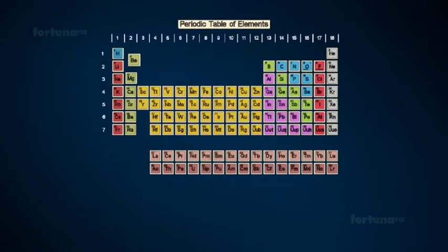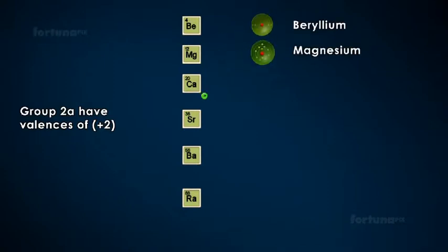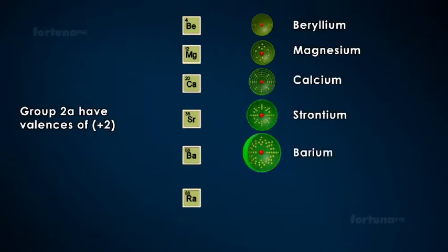Atoms of groups 2A have valences of plus 2. These elements include beryllium, magnesium, calcium, strontium, barium, and radium.